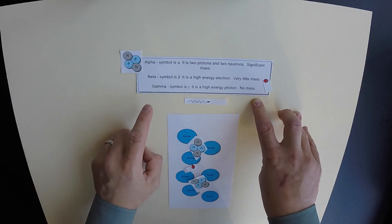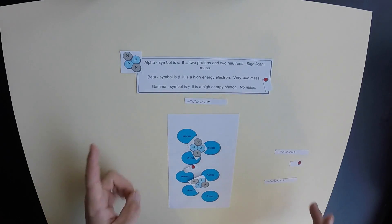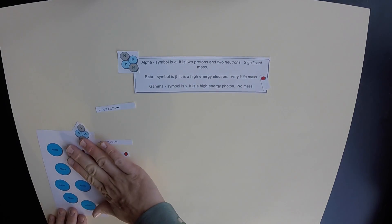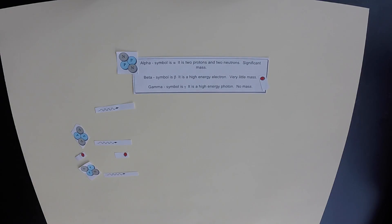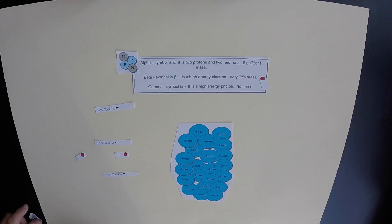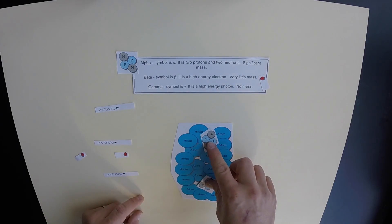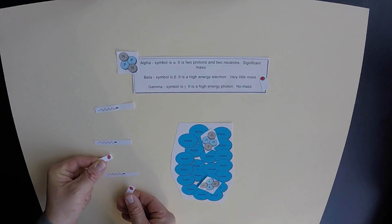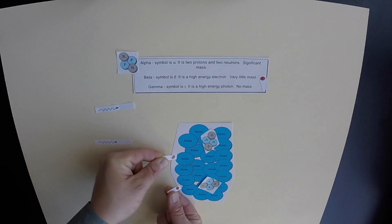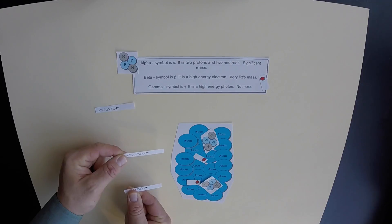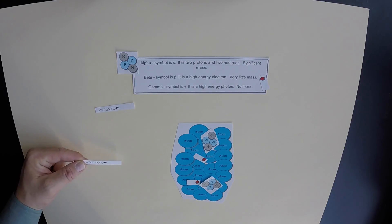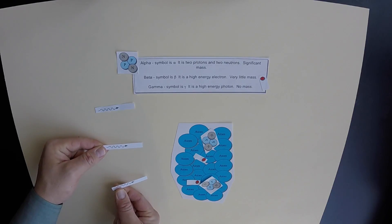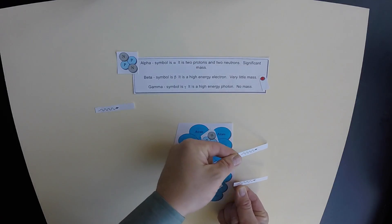Unless you have something very thick and very dense, gamma particles will not be absorbed. Now let's bring in another substance that's a little more dense. This substance will definitely absorb alpha particles — they will not pass through. Beta particles most likely will also be mostly blocked by this more dense substance. For gamma particles, even though we have a more dense substance, the gamma particles, because they have no mass and don't interact with matter very much, will likely still pass right through.